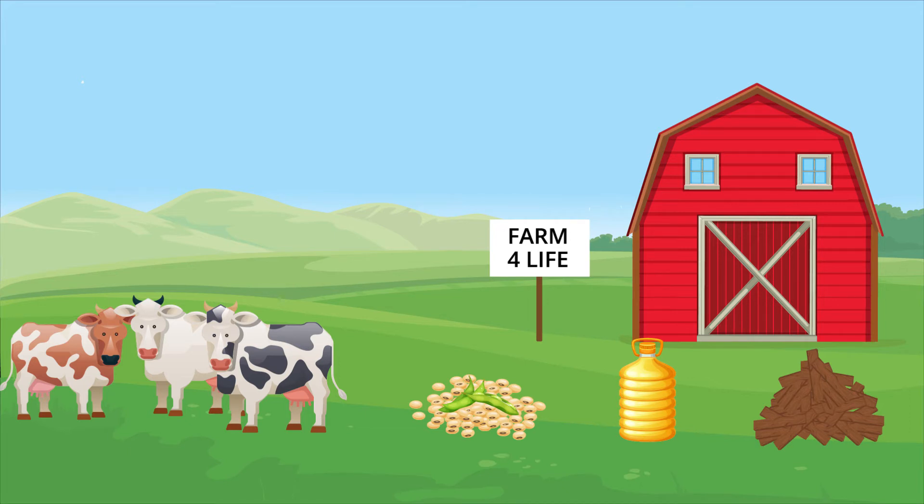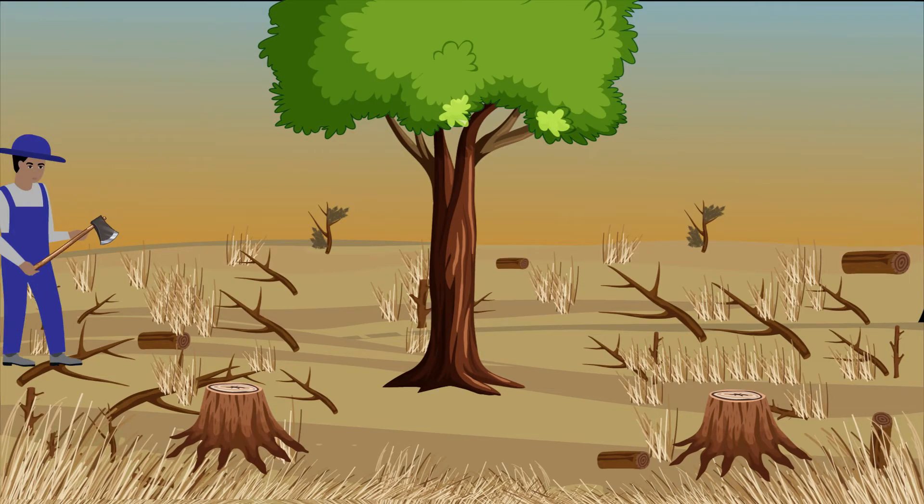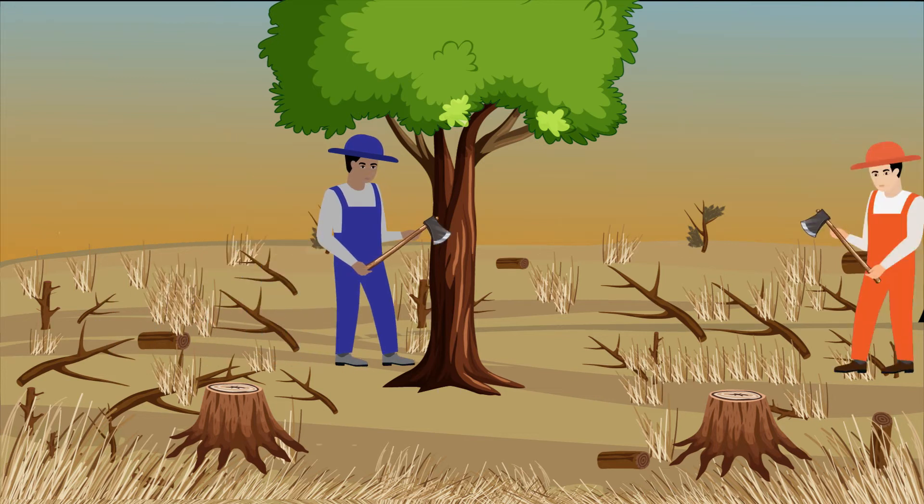To make matters worse, land set aside for agriculture is usually set aside for good, meaning that landowners won't consider reforesting the area. Clear cutting, a logging practice where all the trees in an area are felled or cut down, is still common.